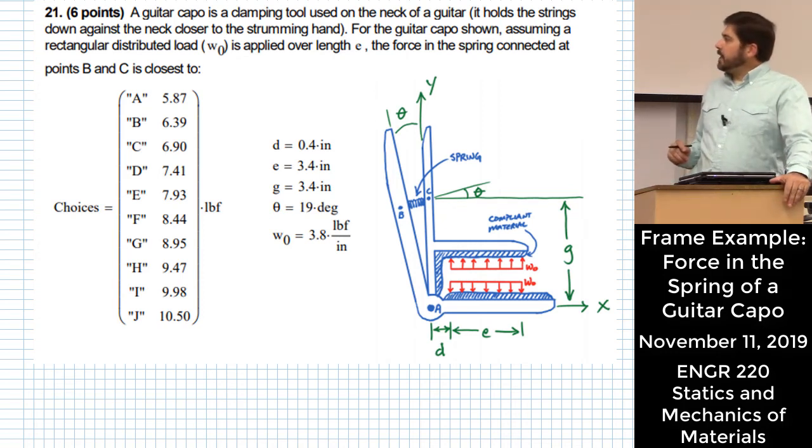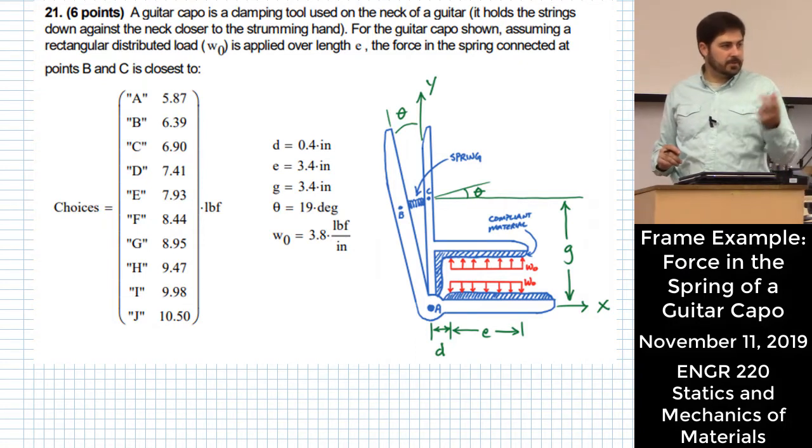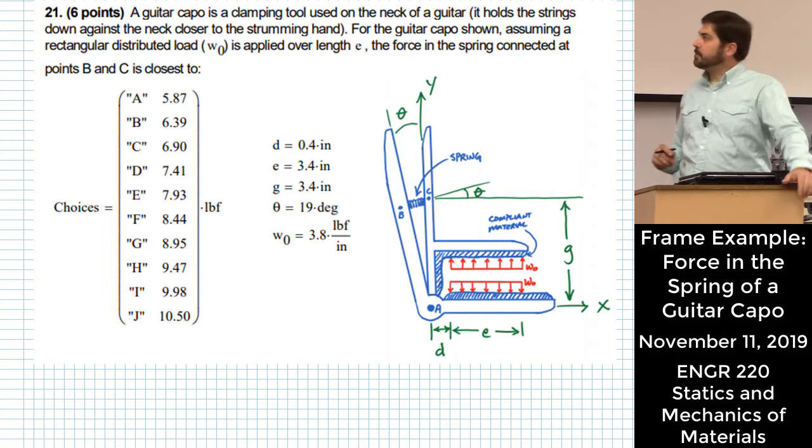Alright, so for this one we have a guitar capo. It's a clamping tool that you use to essentially play in a different key. You put it on your guitar neck, play in a different key.